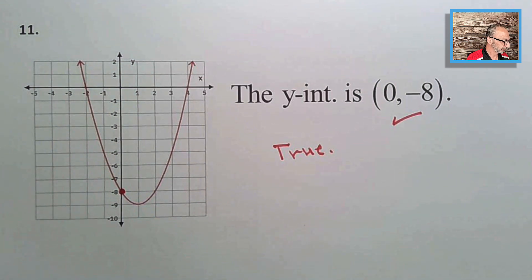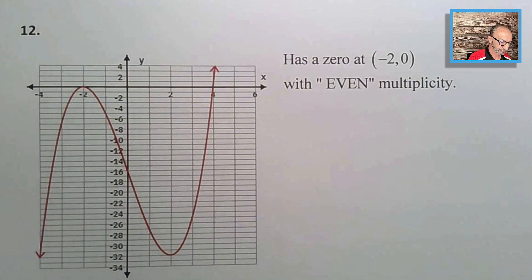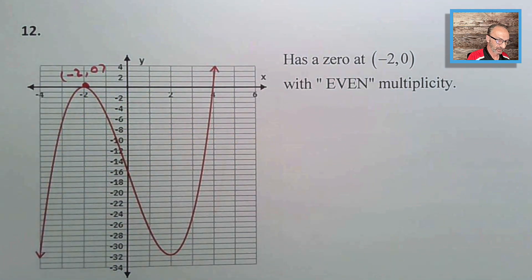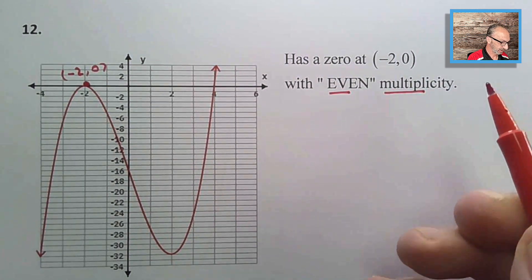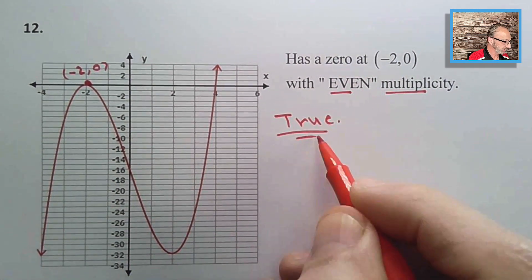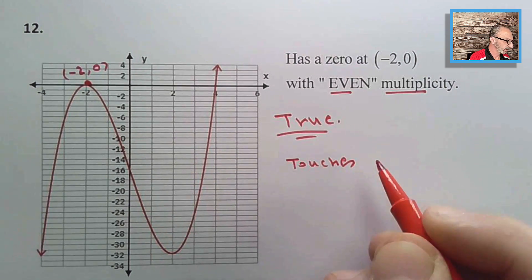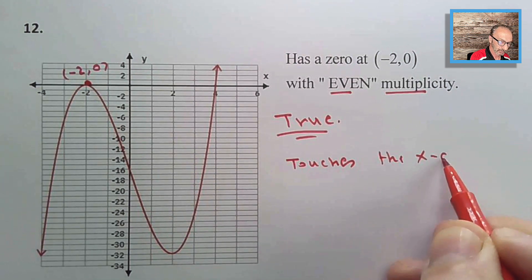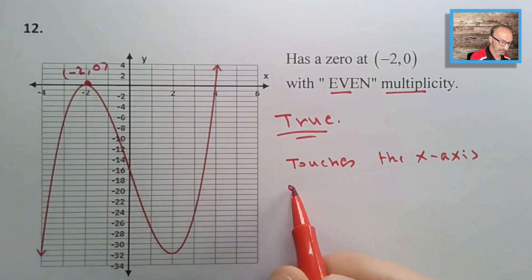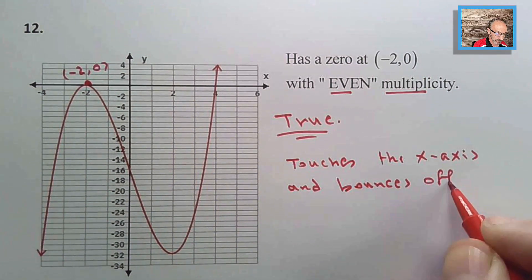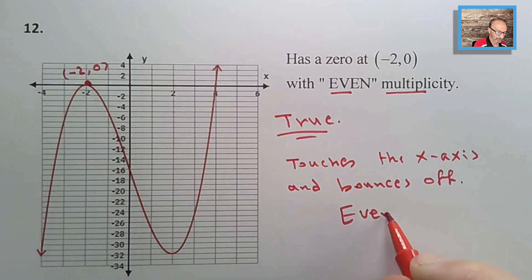Number eleven: the y-intercept is (0, −8). Looking at the graph, (0, −8) is indeed the y-intercept — that is true. Number twelve: the graph has a zero at (−2, 0) with even multiplicity. This is true because the graph touches the x-axis and bounces off — that behavior is called even multiplicity.